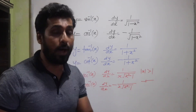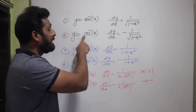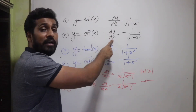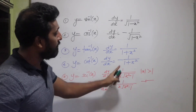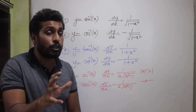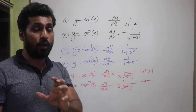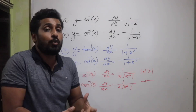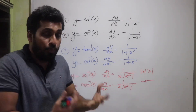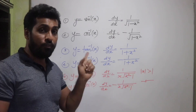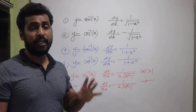Always remember: when writing the derivative of sec⁻¹(x) and cosec⁻¹(x), |x| must be greater than 1. Also, recall the rule that whenever a 'c' function appears — cosec, cot, cos — the derivative always has a negative sign. Make sure to add these formulas to your existing list of derivative formulas.